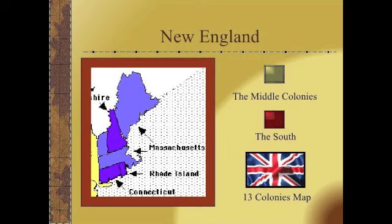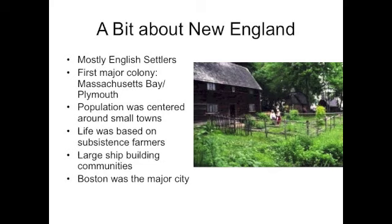The first colonial region we will discuss is New England. New England consisted of New Hampshire, Rhode Island, Connecticut, and Massachusetts. Massachusetts Bay Colony was one of the first British colonies on the North American mainland, and people had lived there since the early 17th century. Most of the settlers of New England were from England — hence the name — and the first major colony was the Massachusetts Bay Colony in Plymouth, Massachusetts.